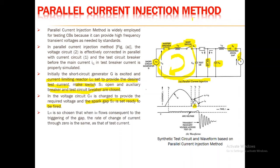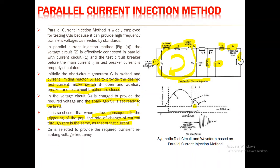LH is chosen so that when the high voltage current IH flows consequent to the triggering of the gap, the rate of change of current through zero is the same as that of the test current IG. CH is selected as the high voltage capacitor to provide the required transient restriking voltage at the natural frequency.